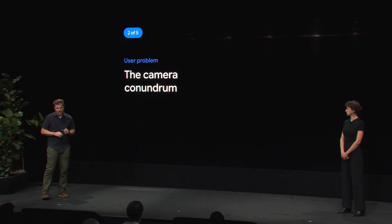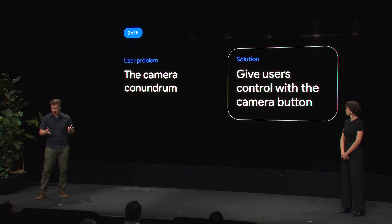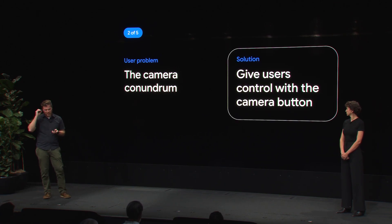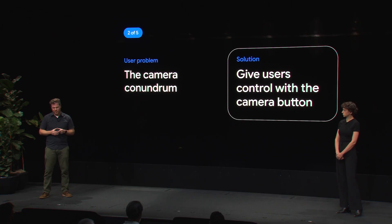Next, let's discuss camera usage. Using the camera constantly in public can affect everyone's social comfort, both for the wearer and the bystanders. Users want to safeguard their own privacy and that of others. So give users control with the camera button — put the user in charge of when the camera is active by assigning the camera double press button to either capture a photo or toggle the camera on and off. Which of those you choose depends on your use case.